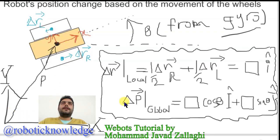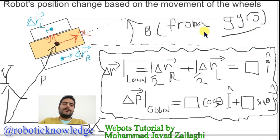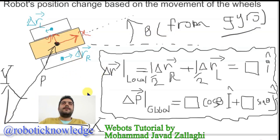How can we project the measurement at this local frame to the global frame? It's easy, because we have the knowledge of the orientation of the robot from the gyro sensor. You can check the previous lecture, where I showed that you can measure this theta using the integral of the angular rate of this mobile robot about the z-axis of the global coordinate.